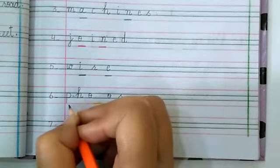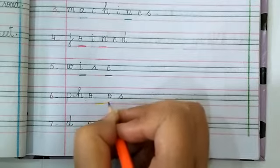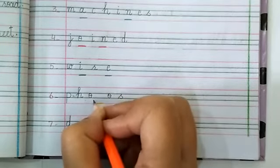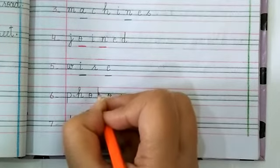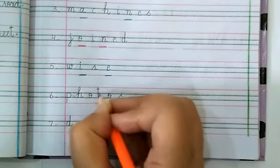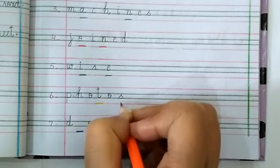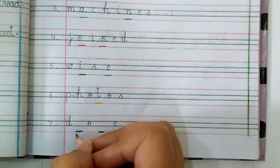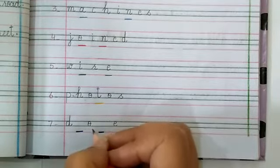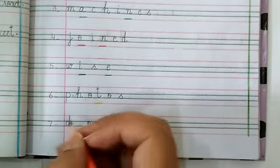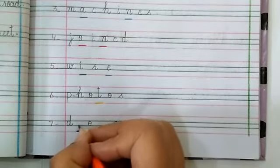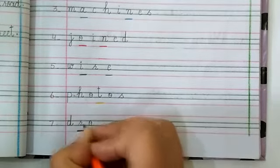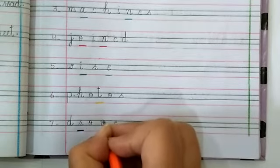Next word is P-H-O dash O-S. This word is Photos. P-H-O-T-O-S. Photos. Look at the last word. D-O-E. D-R-O-N-E. Drone.